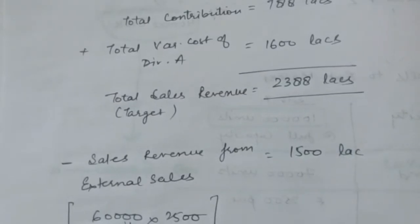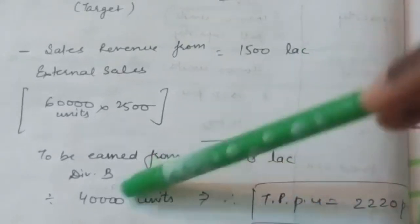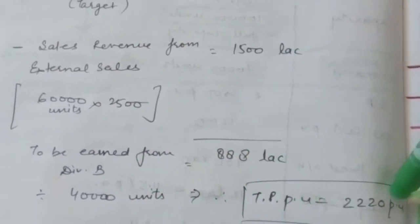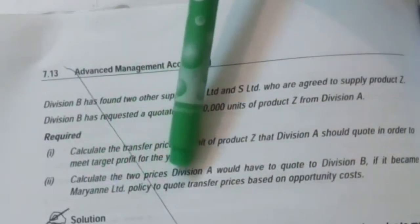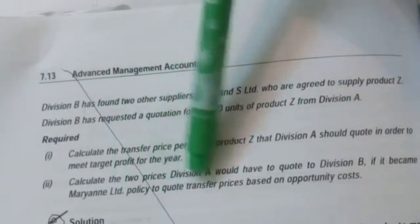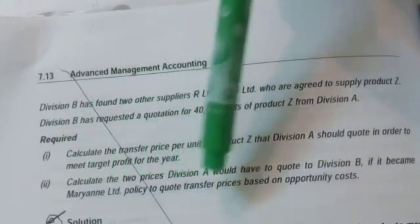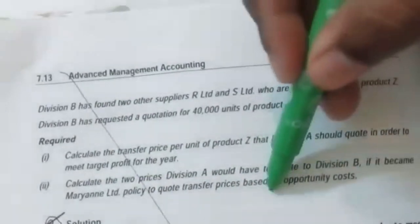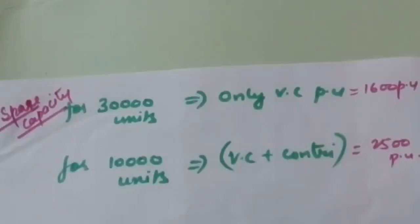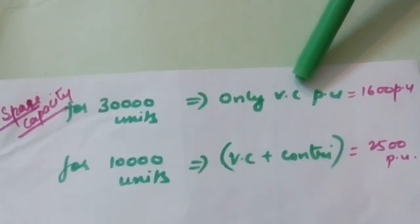Now in the second part, we need to calculate two prices that Division A would quote to Division B. It became Marian Limited's policy to quote transfer pricing based on opportunity cost. So on the opportunity cost basis, we quote two prices. The spare capacity is 30,000 units, so for those Division A will charge $1,600 per unit. For the remaining 10,000 units, it will charge variable cost plus contribution lost, which comes to $25,000 per unit. So these are the two transfer prices.